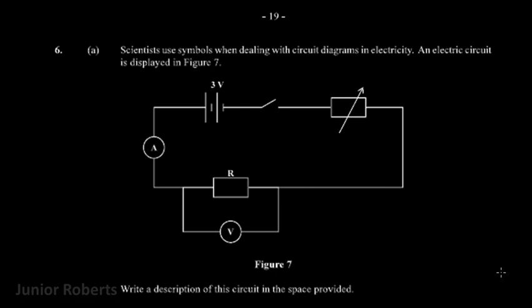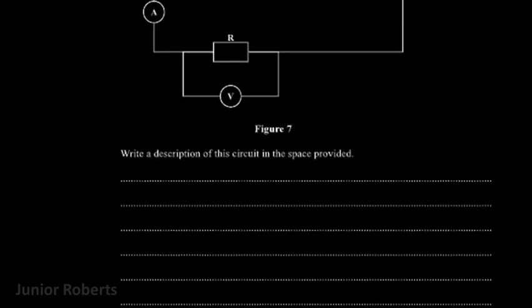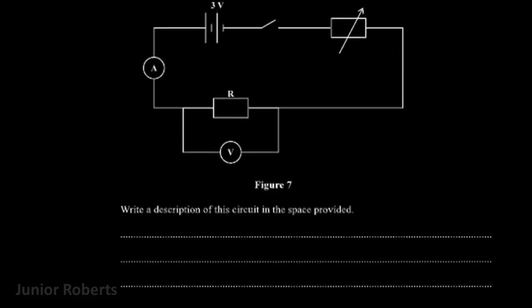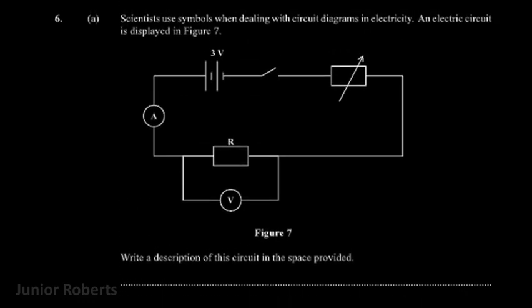The question says scientists use symbols when dealing with circuit diagrams in electricity. An electric circuit is displayed in figure seven — here we have our electric circuit with a couple of components. If we scroll down, the question says to write a description of the circuit in the space provided. So first of all, let's examine this circuit.